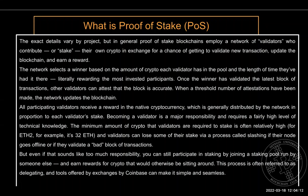In proof of stake, the network of validators buy and stake the protocol's crypto. For Ethereum v2, they buy Ethereum and stake it. To be a validator, you have to stake around 32 ETH, which corresponds to roughly $70,000. Being a validator gives you the chance to earn fees back — you can validate new transactions, update the blockchain, and earn rewards. The network selects a winner based on the amount of crypto each validator has staked and how long they've held it.